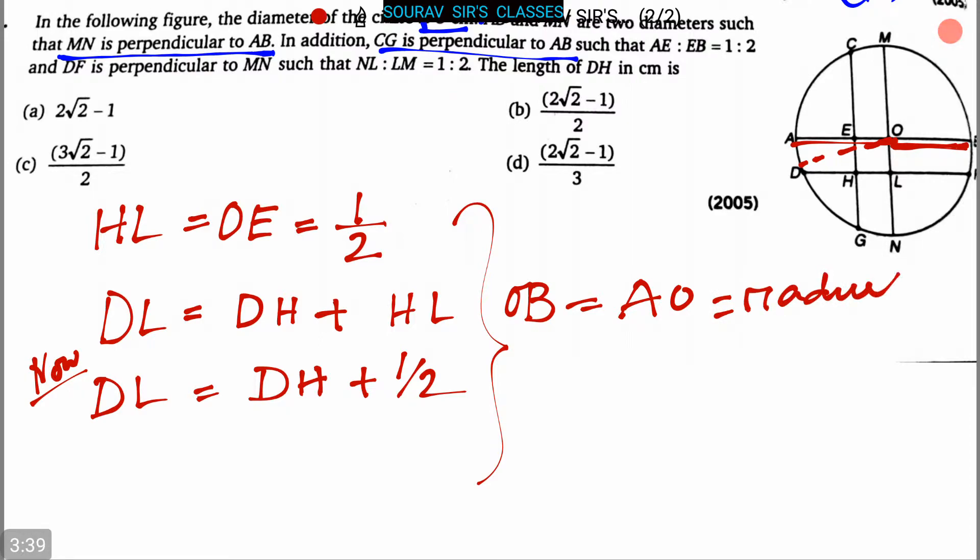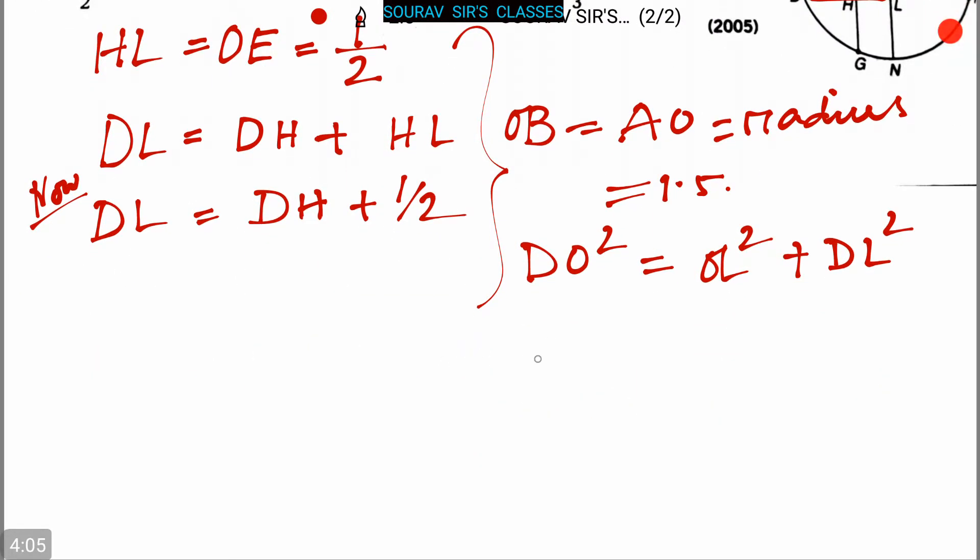Now DO square is equal to OE square plus DL square from this graph. Now again, we say that 3 by 2 whole square is equal to half square plus DH plus half. We are just putting this value of DL here.